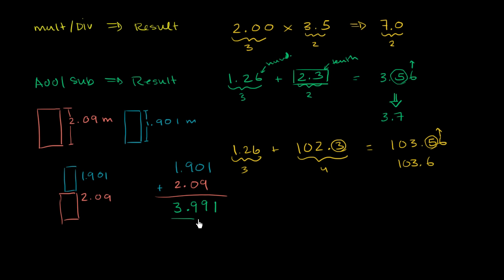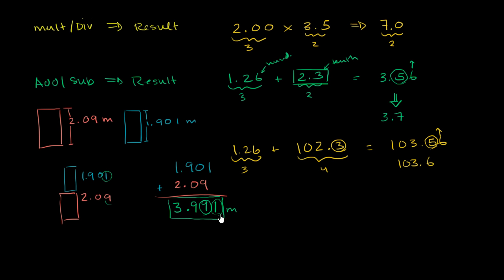The problem is that if I tell you the tower is 3.991 meters tall, I'm implying I was able to measure the entire tower to the nearest millimeter. But in reality, I was only able to measure one part to the nearest millimeter — the other part was only measured to the nearest centimeter. To make clear that our measurement is only good to the nearest centimeter, we need to round to the hundredths place. Since 1 is less than 5, we round down, and we can only legitimately say the tower is 3.99 meters.